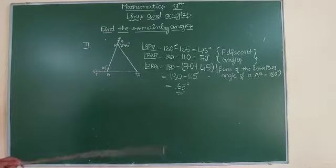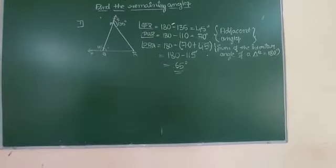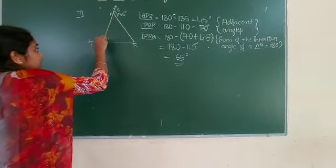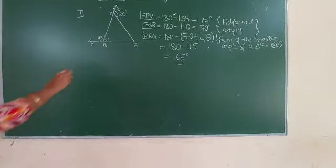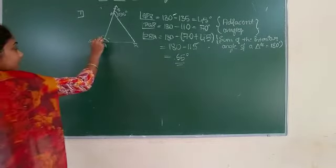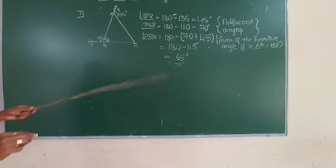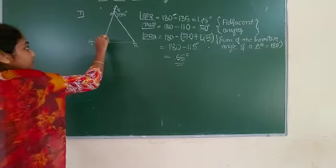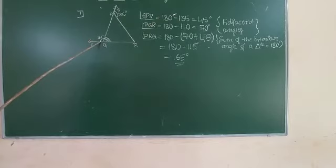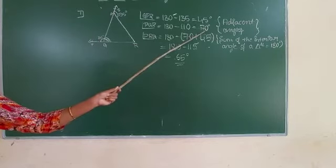Here angle PQR is unknown. Using the known statement: when a ray stands on a straight line, the adjacent angles form a linear pair and their sum is 180 degrees. So when we add 110 degrees and angle PQR, we get 180 degrees. We already know 110 degrees, so subtracting: angle PQR is equal to 70 degrees.